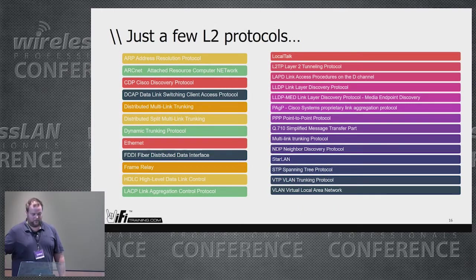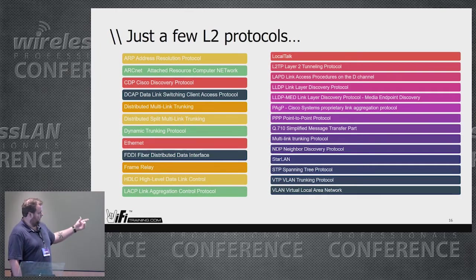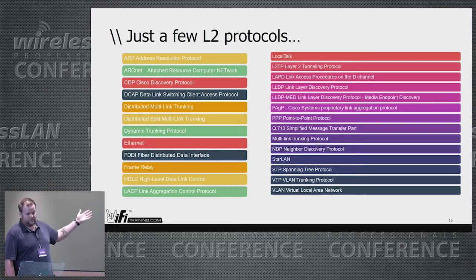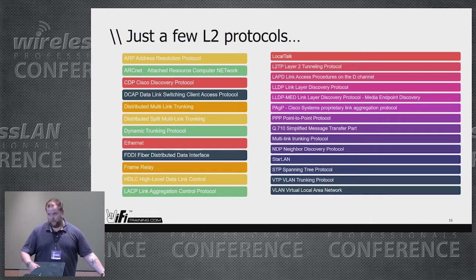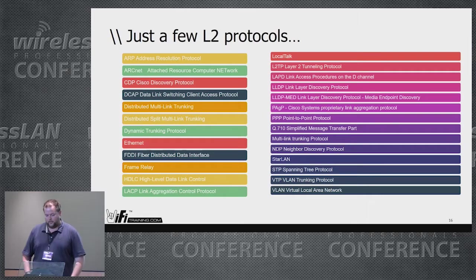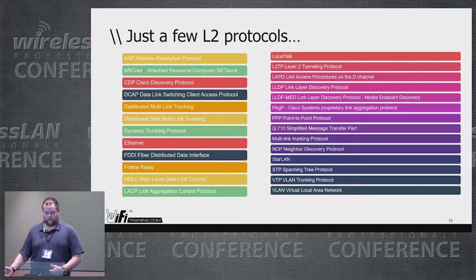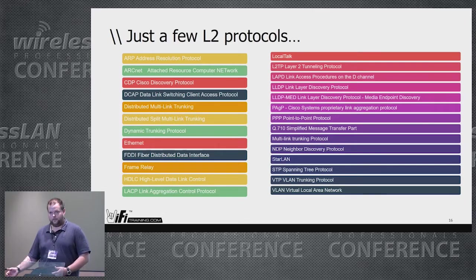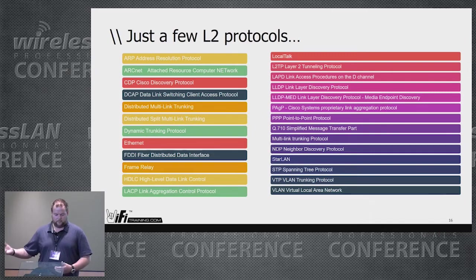Whenever people say 'I'm good with layer 2,' there's a lot in there. We need segmentation, we need the switches to work without creating loops, we need redundancy, we need first-hop redundancy — all that stuff plays a role. All the sites need it repetitively. We've got to do the same things over and over again.